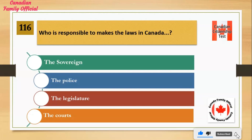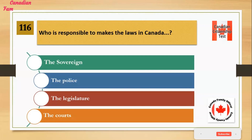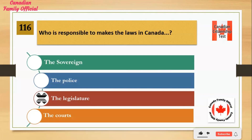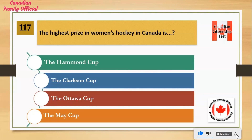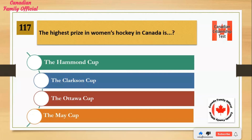Who is responsible for making the laws in Canada? Number 1: the Sovereign. Number 2: the Police. Number 3: the Legislature. Number 4: the Courts. And the answer is the Legislature.